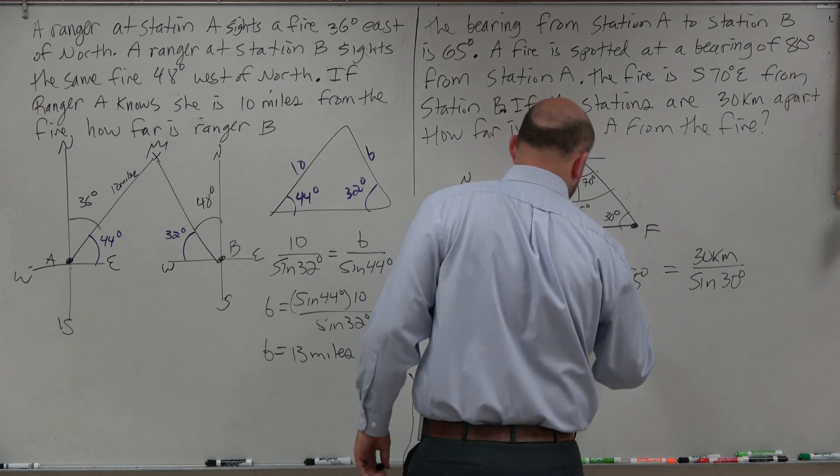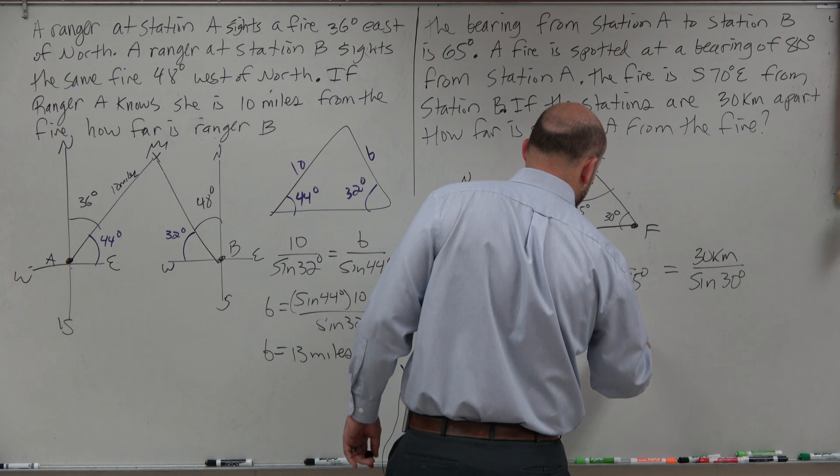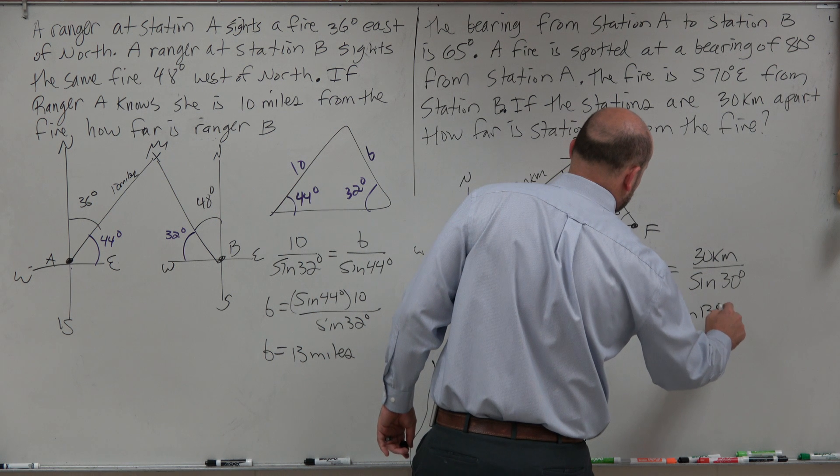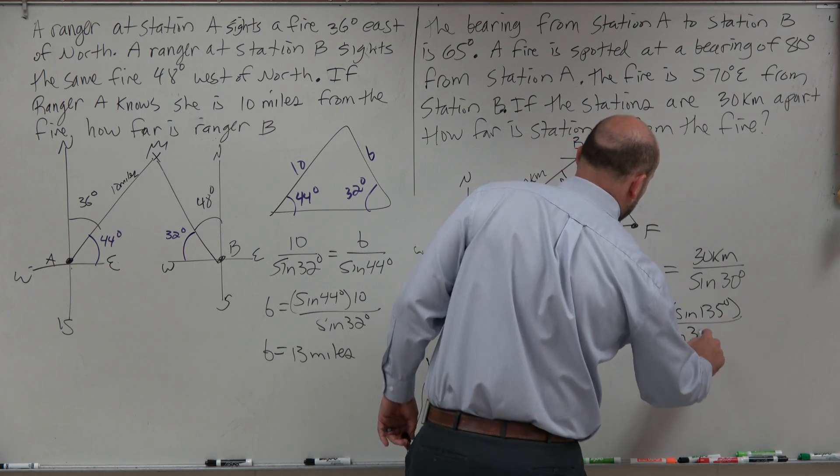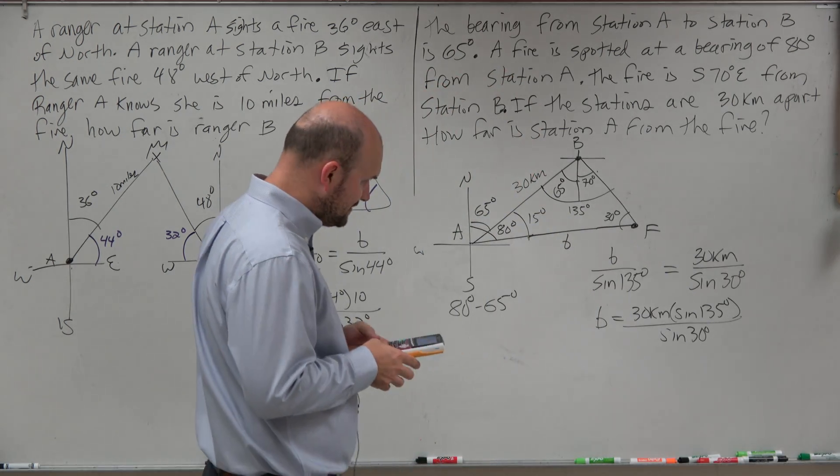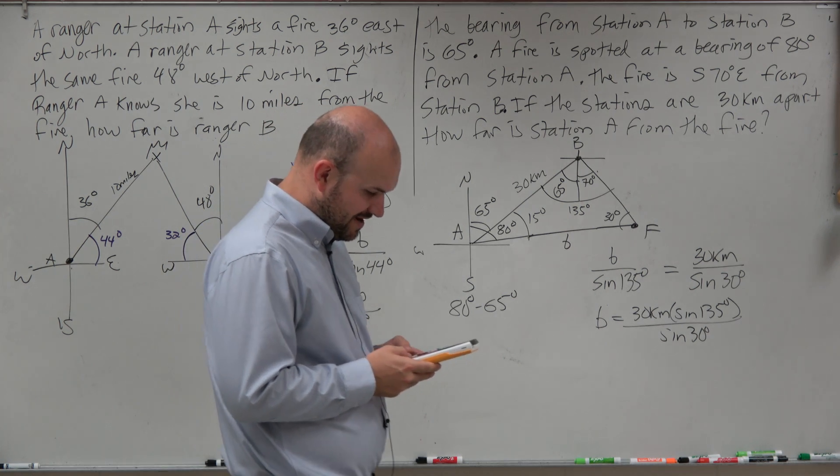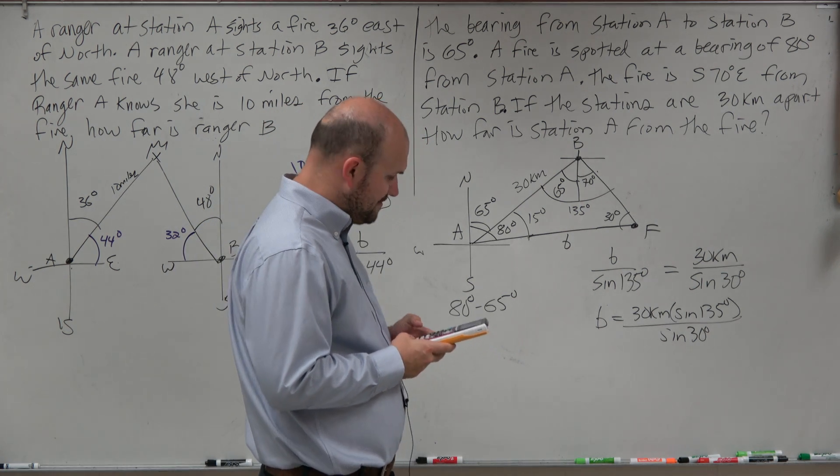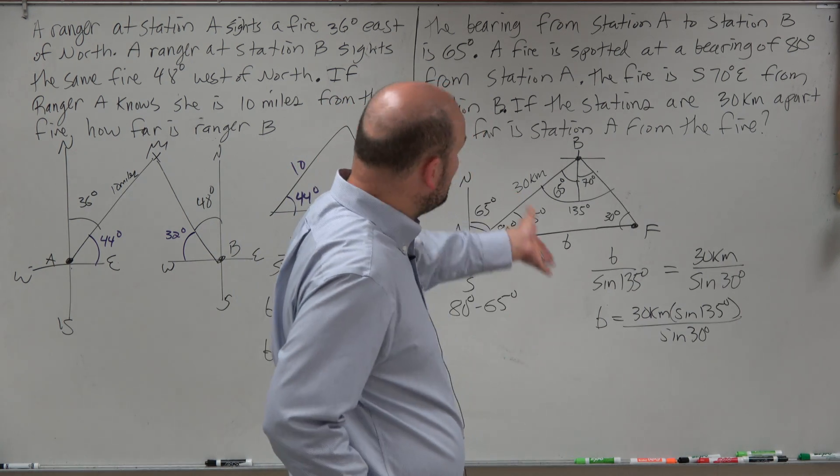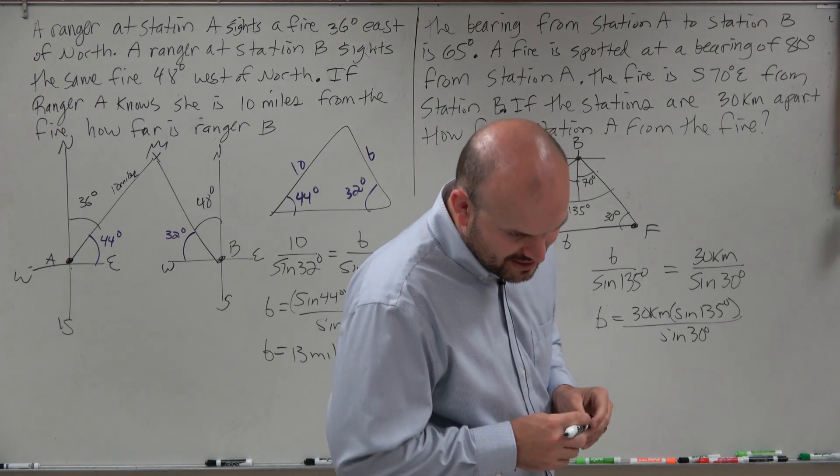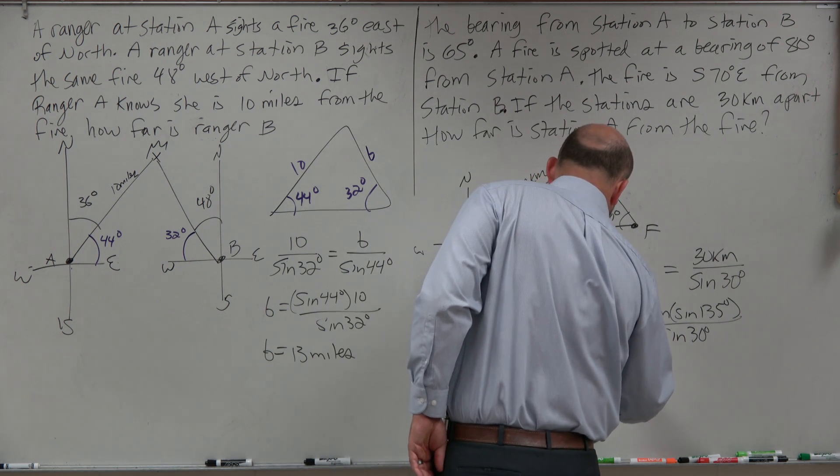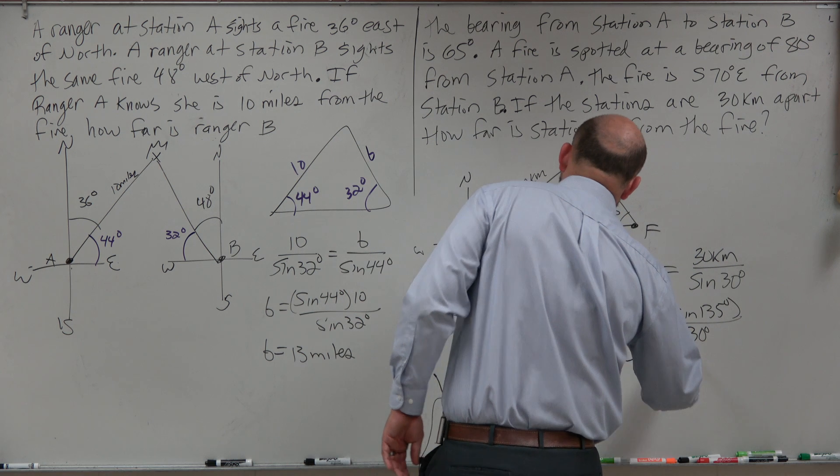I'll do B over the sine of 135 degrees is equal to 30 kilometers over the sine of 30 degrees. To solve for B, I'm just going to multiply by the sine of 135 on both sides. So I have 30 kilometers times the sine of 135 degrees all over the sine of 30 degrees. I'll just do the sine of 135 times 30 divided by the sine of 30, and I get 42.42, and that sounds about right. If I'm going to round that to the nearest kilometer, that would just be 42. So B is equal to 42 kilometers.